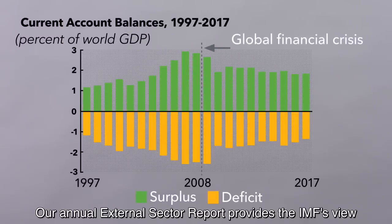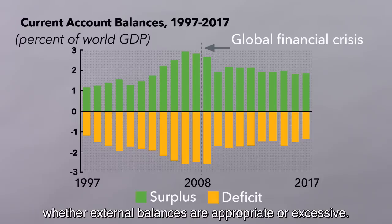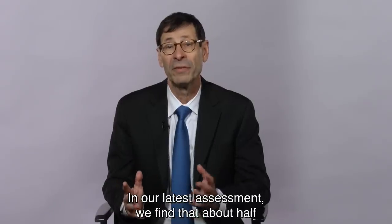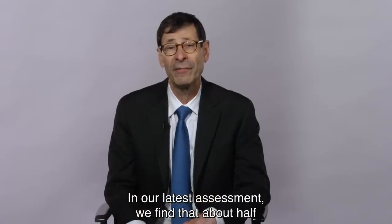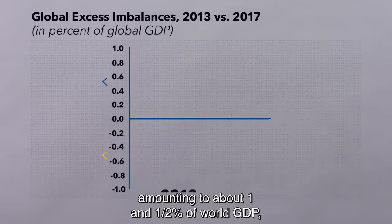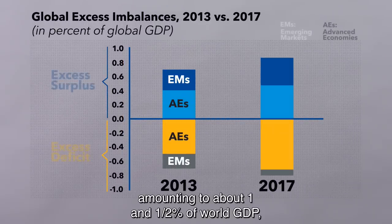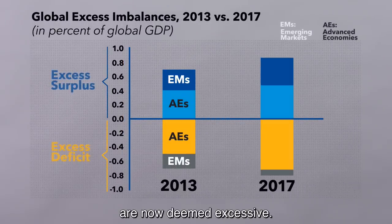Our annual external sector report provides the IMF's view on whether external balances are appropriate or excessive. In our latest assessment, we find that about half of the global current account balances — amounting to about 1.5% of world GDP — are now deemed excessive.